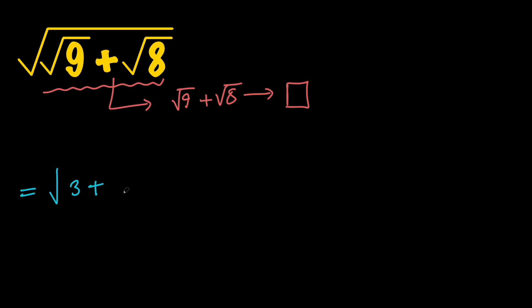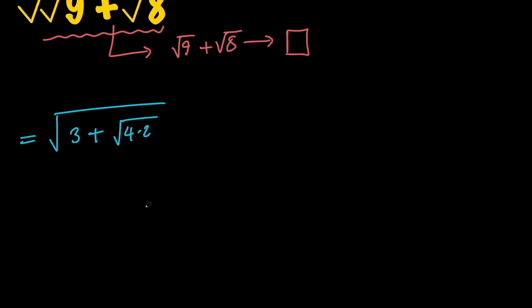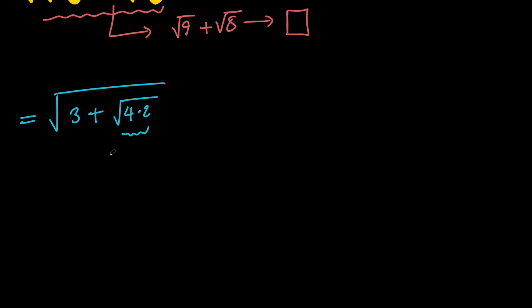But notice that 8 is just simply 4 times 2. Let's go ahead and separate these two. So we can write this as the square root of 3 plus the square root of 4 times the square root of 2.